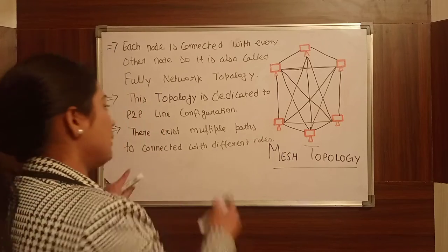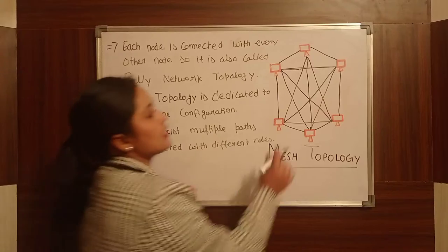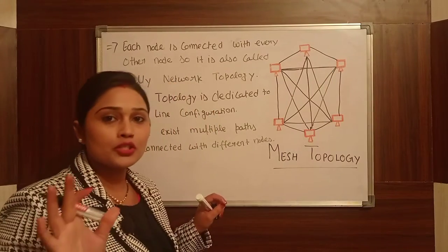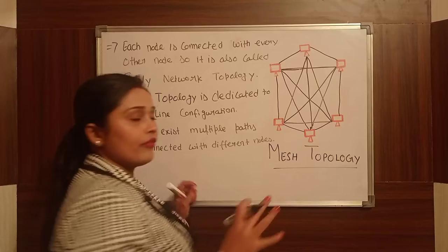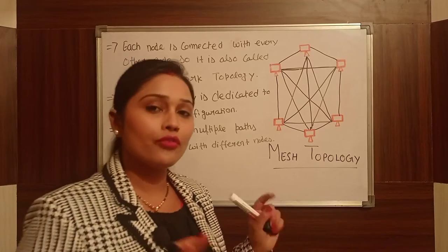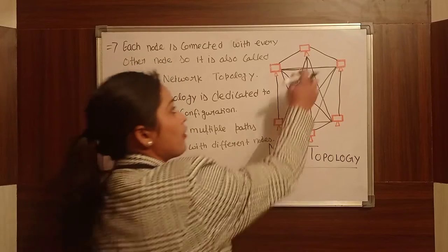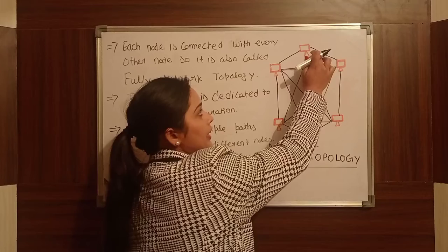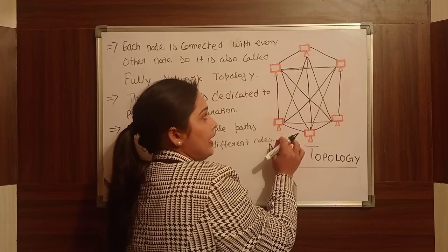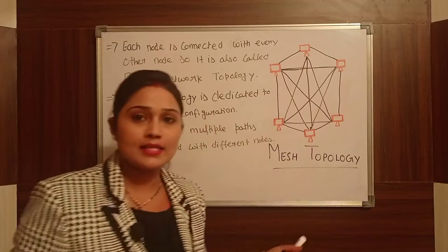If there are multiple paths, it means if one path fails, then there will be no effect on the entire system. The other paths will still be available, so there will be multiple paths still connected.